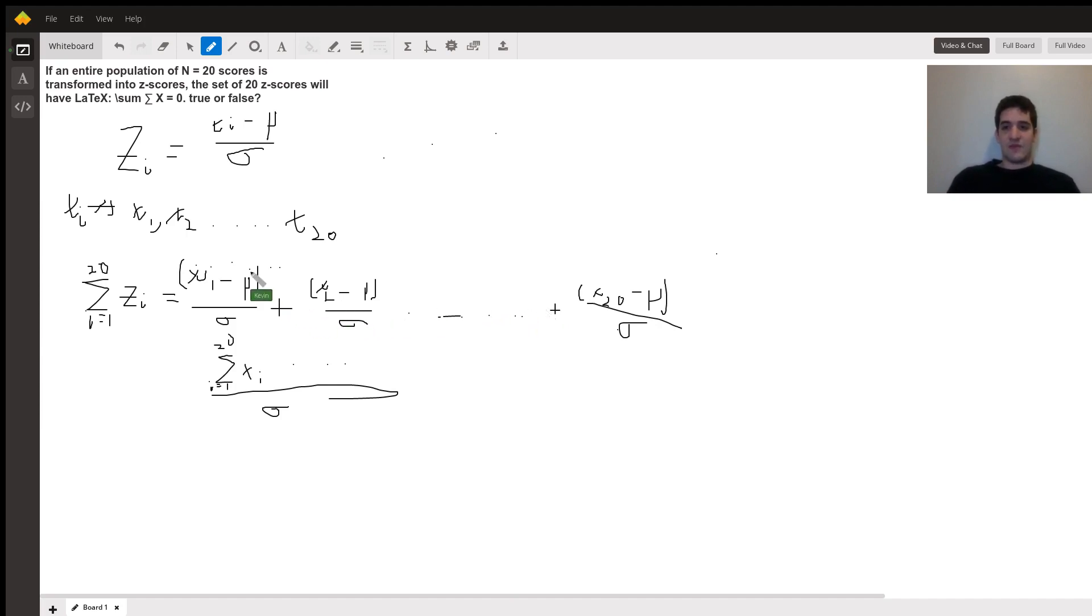So we'll just say, over sigma, we've got the sum from i equals 1 to 20 of xi. This is just representing the fact that we have x1 plus x2 all the way to x20 in our numerator, and then how many times are we subtracting mu? We're subtracting mu here, mu here, and so forth, so it'll end up being minus 20 mu. Okay, so this is the value that corresponds to the sum of our z-scores. Sum of xi from i equals 1 to 20 minus 20 mu all over sigma.